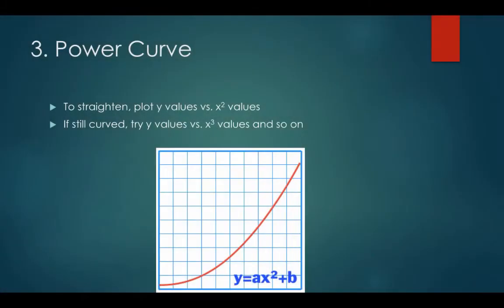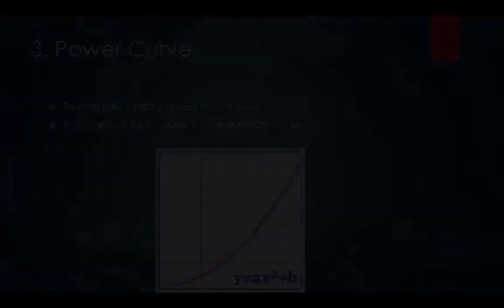The power curve shows points that are best represented by a curve that gradually rises up as you move left to right on the x-axis, and it continues to increase in steepness to the right, like a smooth check mark. The algebraic equation that represents this line of best fit is y equals ax squared plus b. We will show you how to straighten this curve for data analysis by plotting y versus x squared values the next day.